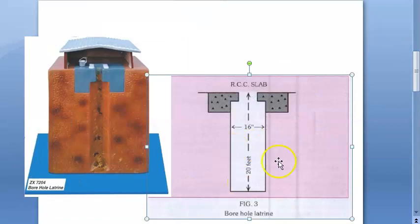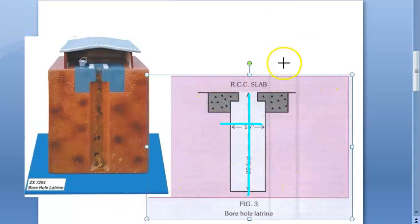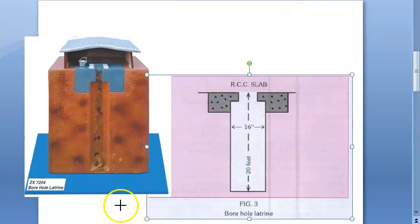As shown here, the depth is 20 feet and the diameter is 16 inches — though it's not entirely clear why one measurement is in inches and the other in feet. So now you have a basic understanding of what borehole latrine is.